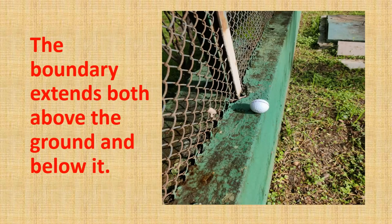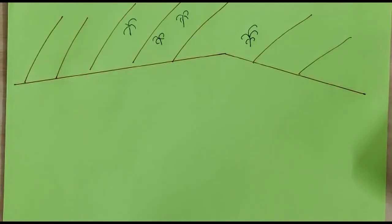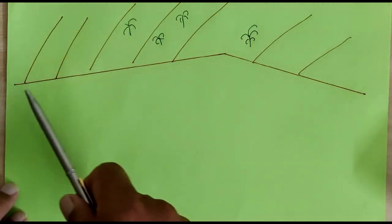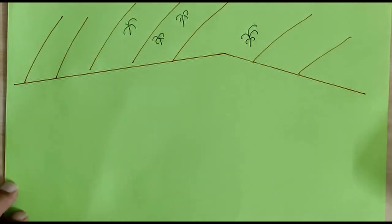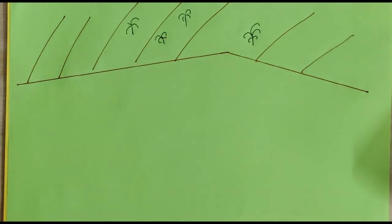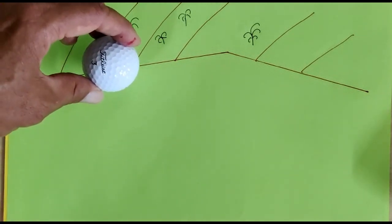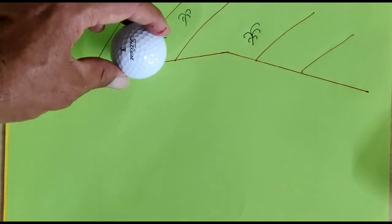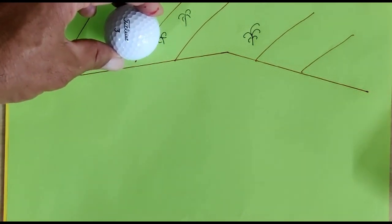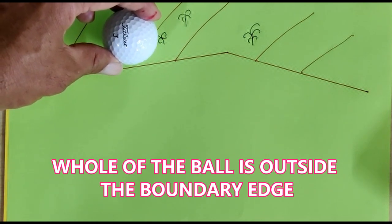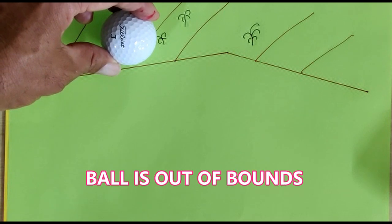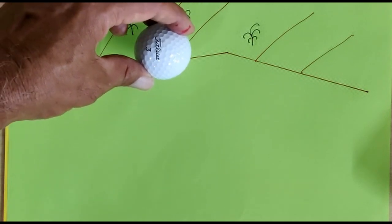The boundary extends both above the ground and below it. Let us understand this with the help of our diagram. This is the boundary of the course, defined by a line. A ball will be out of bounds if the whole of the ball crosses this line — if it has crossed the line of the boundary, this ball is out of bounds.